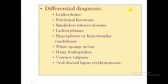Coming to the differential diagnosis, leukoedema is a normal variant — a grayish-opalescent hue of the oral mucosa that slightly resembles Leukoplakia, but on stretching, it completely disappears. It has no relation to Leukoplakia and no association with tobacco. Friction keratosis can resemble Leukoplakia, but there is always a sharp edge or jagged object in contact with that localized area, and it has no tobacco association.